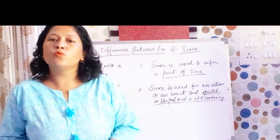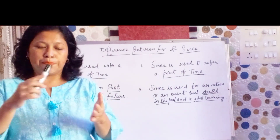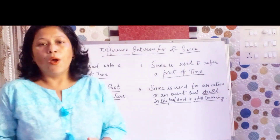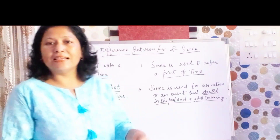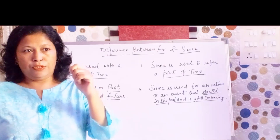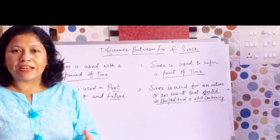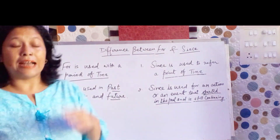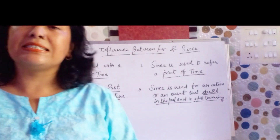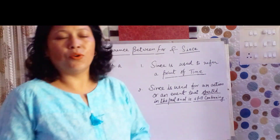'For' is used in all the tenses — past, present, future. Whereas 'since' is used to refer to any action or event that took place in the past and is still continuing.